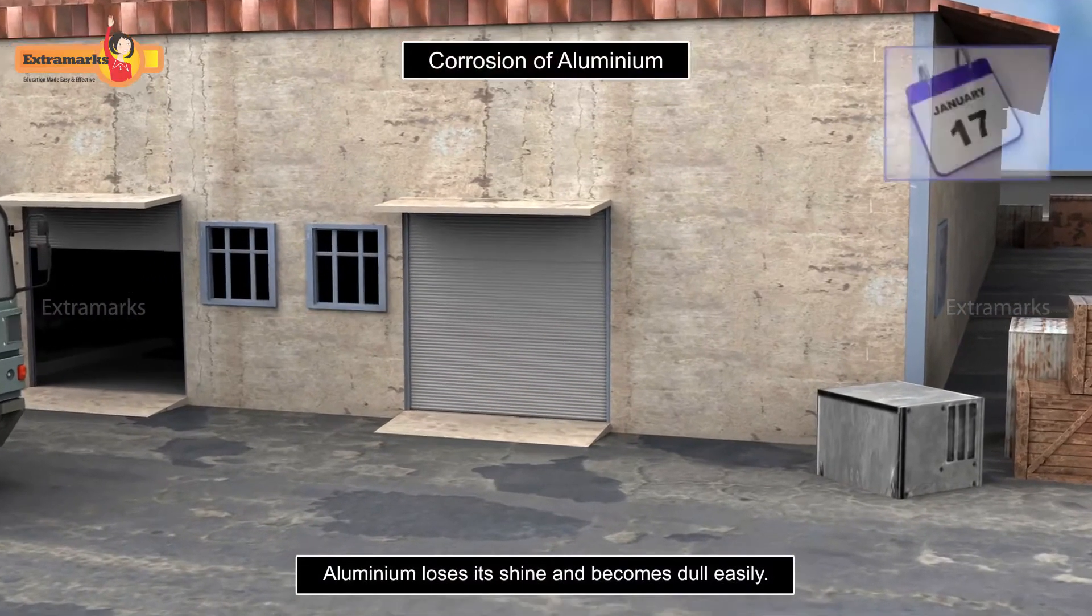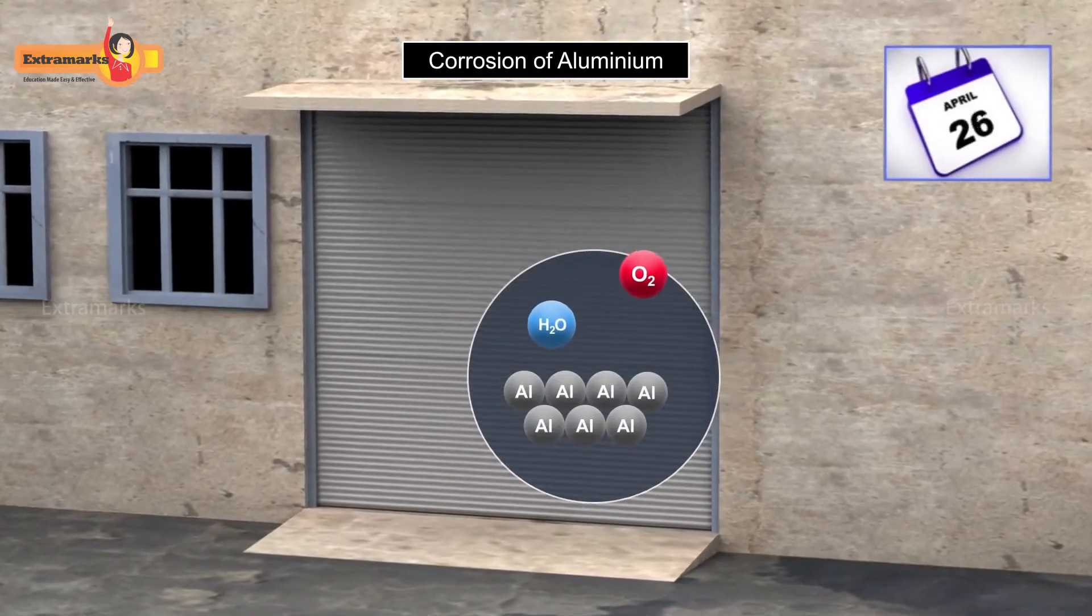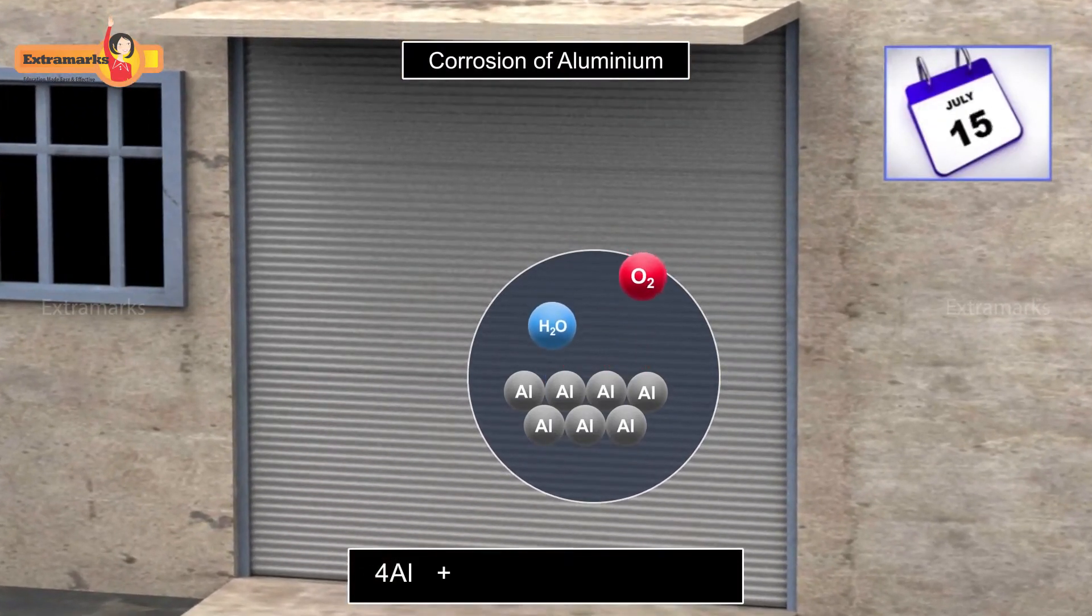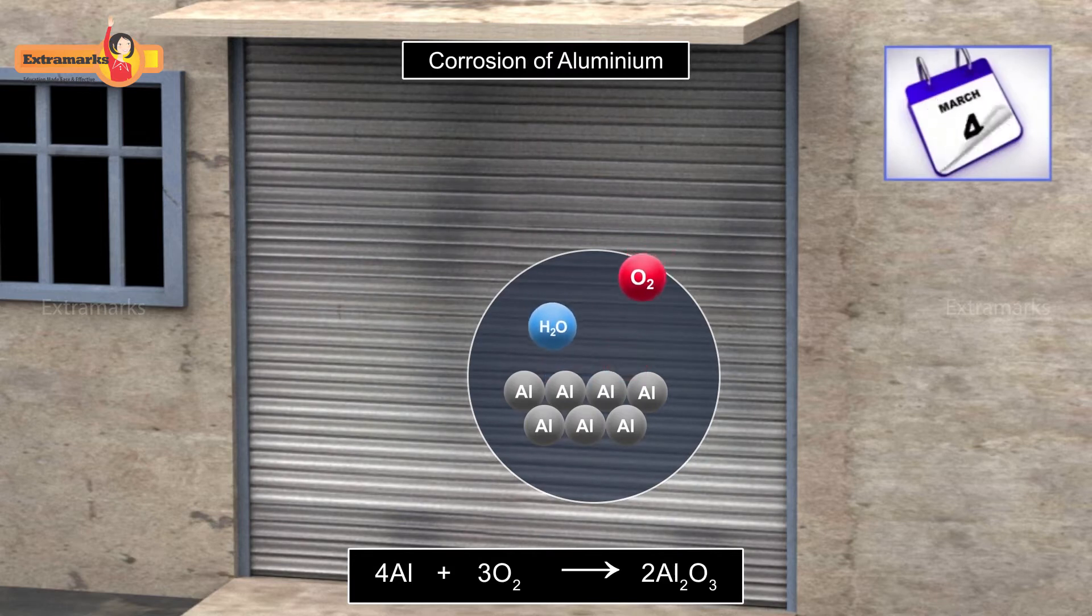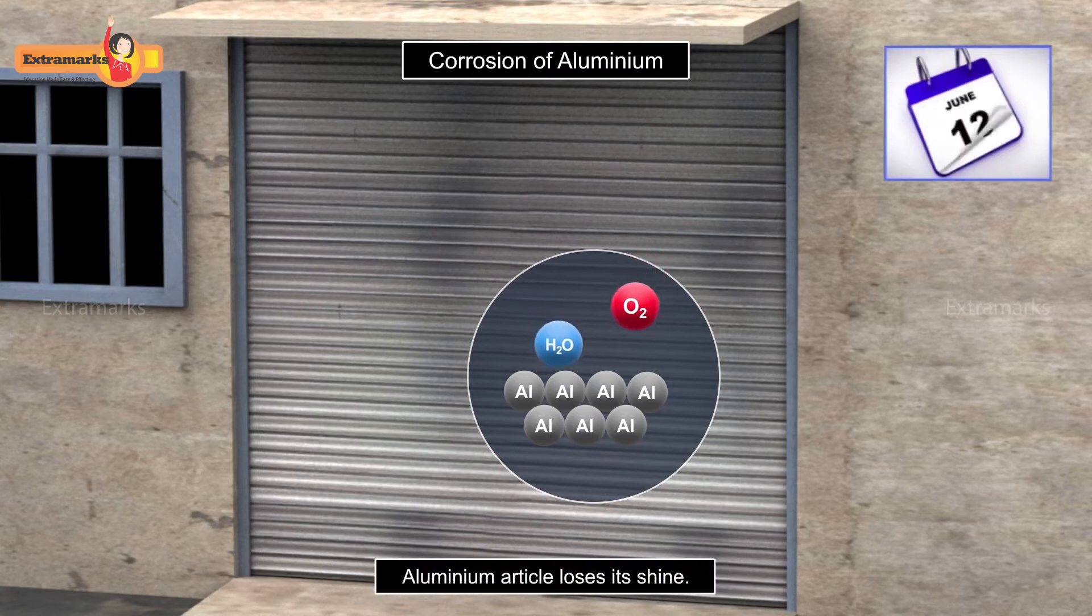Aluminum articles lose their shine and become dull soon. This is due to the corrosion of aluminum metal when exposed to moist air. Aluminum reacts with oxygen present in the air to form a thin and dull layer of aluminum oxide on its surface. Due to the formation of this dull layer, the aluminum articles lose their shine.